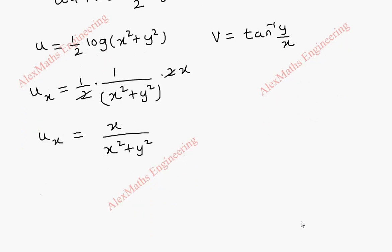In the same way, let's find u_y. Half is written as it is. This is 1 by x square plus y square and by chain rule, derivative of x square, x is constant so it is 0 and y square is 2y. We can cancel this.